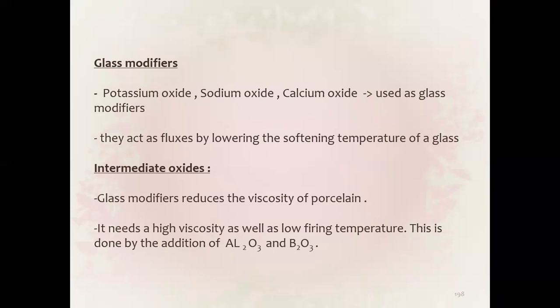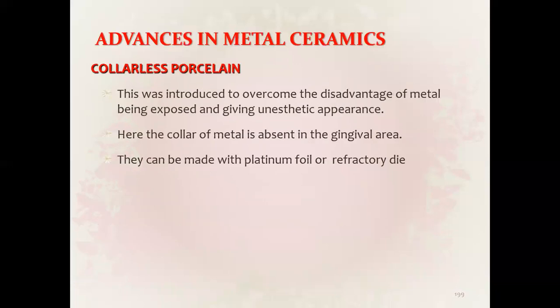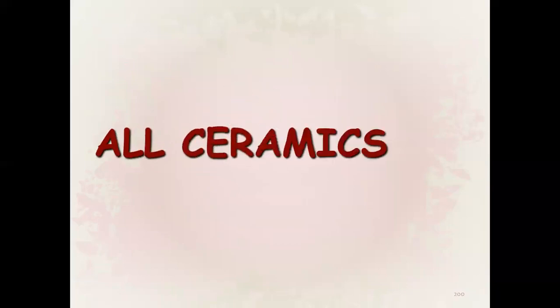Glass modifiers reduce the viscosity of porcelain. To achieve high viscosity with a low firing temperature, alumina oxide is added. Colorless porcelain is used where color is absolutely undesirable; it can be made with platinum foil or refractory die.